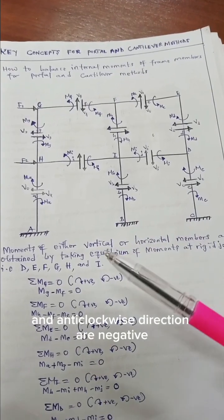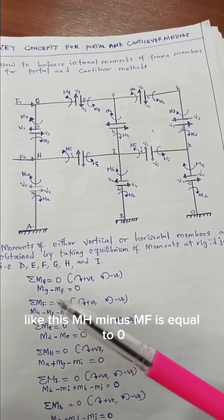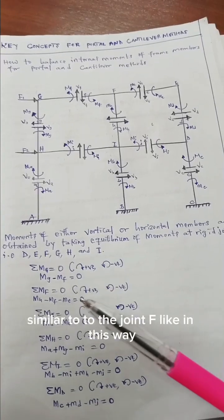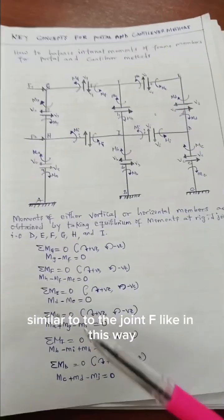...is negative. Like this: Mh minus Mf is equal to zero, similar to the joint F like in this way.